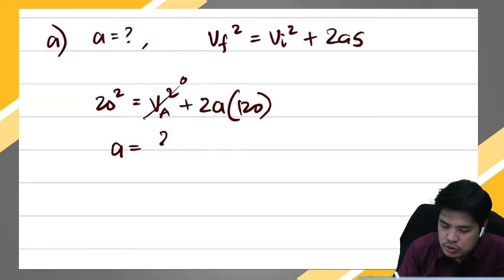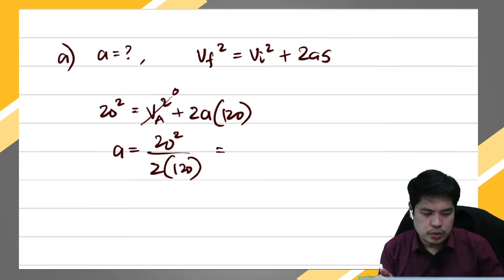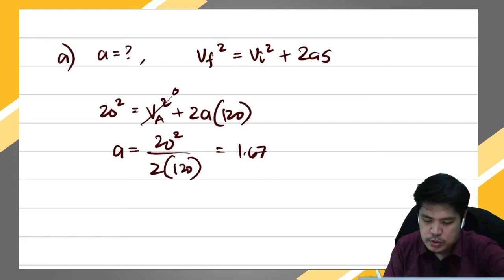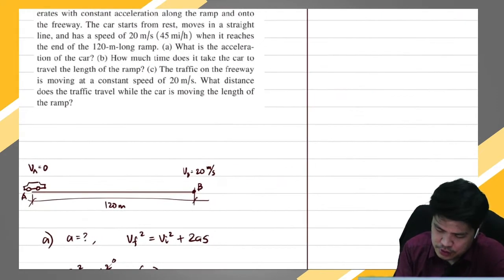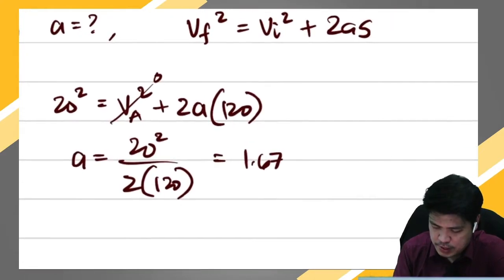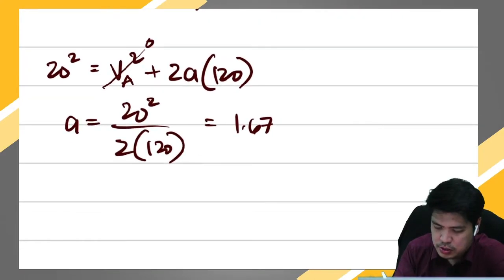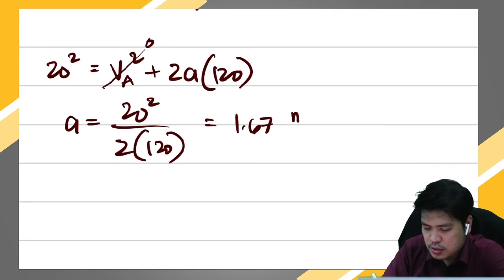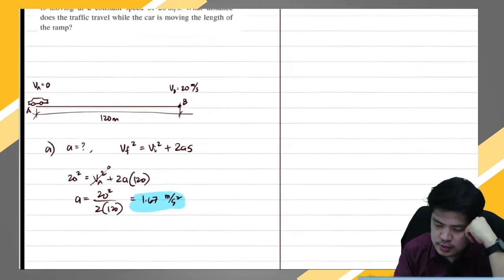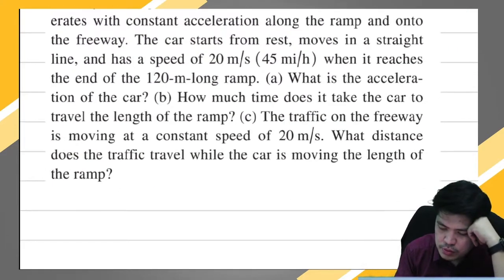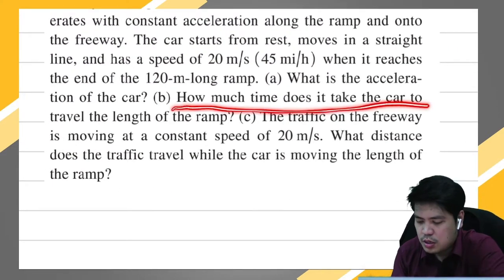Solving: a = 20² / (2 × 120) = 1.67. The unit: 20 is given in meters per second and distance is in meters, so the acceleration is 1.67 meters per second squared. That is our answer — very easy.